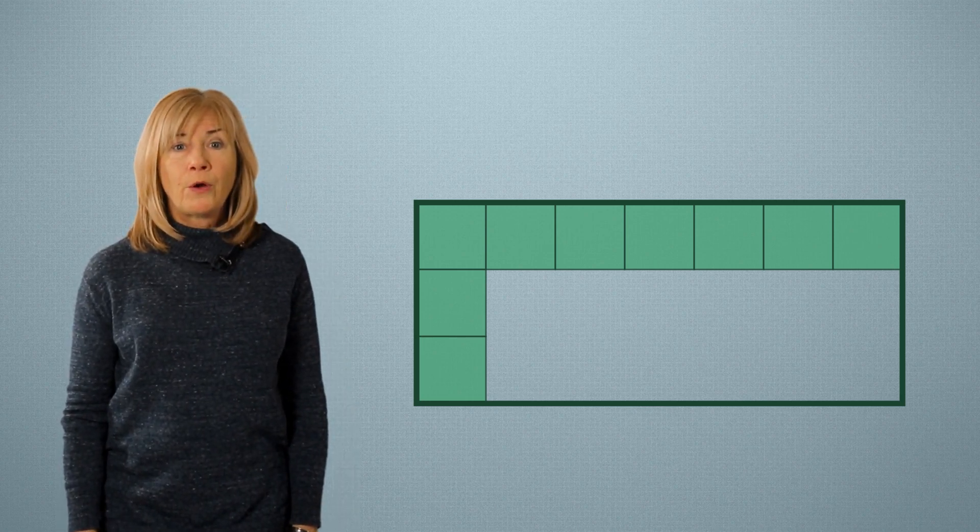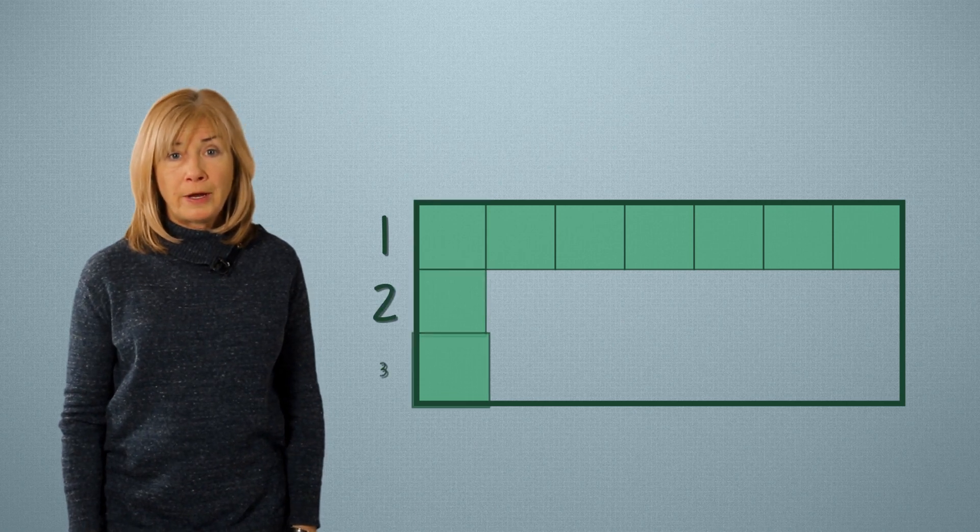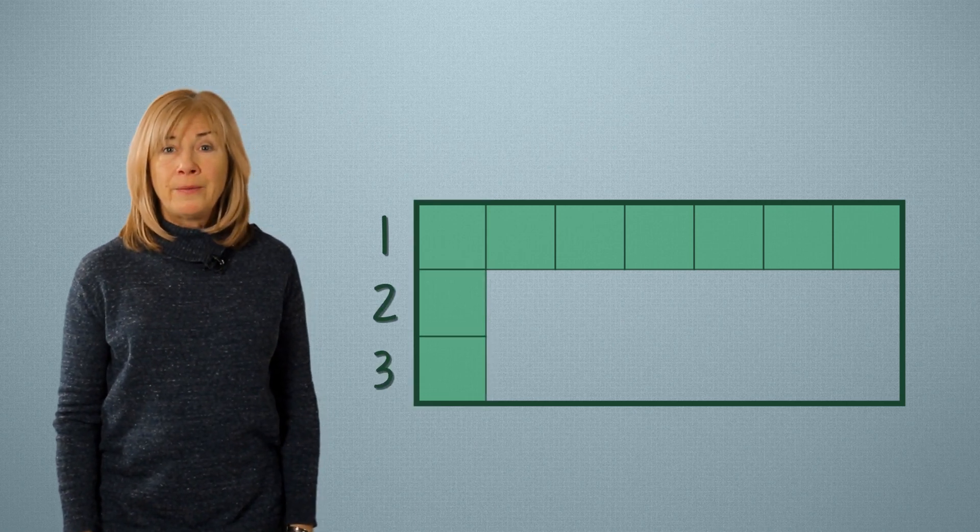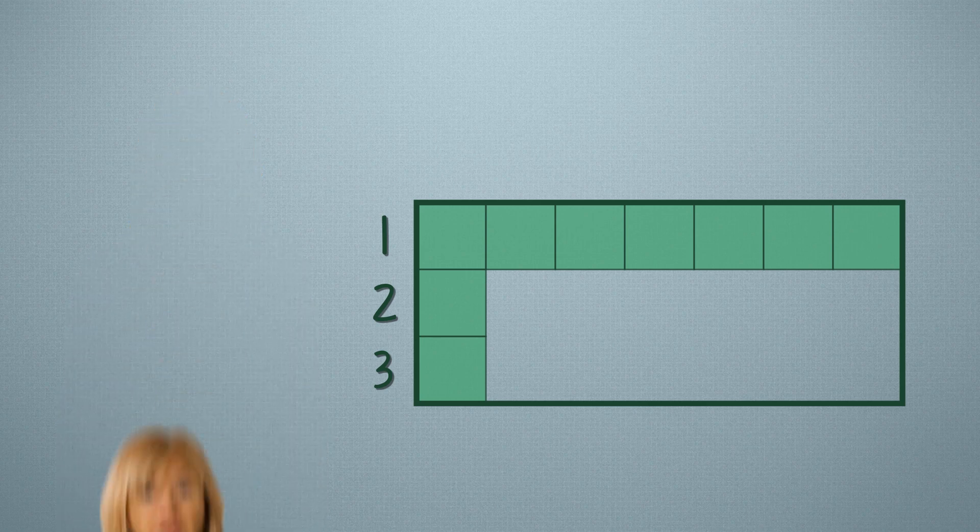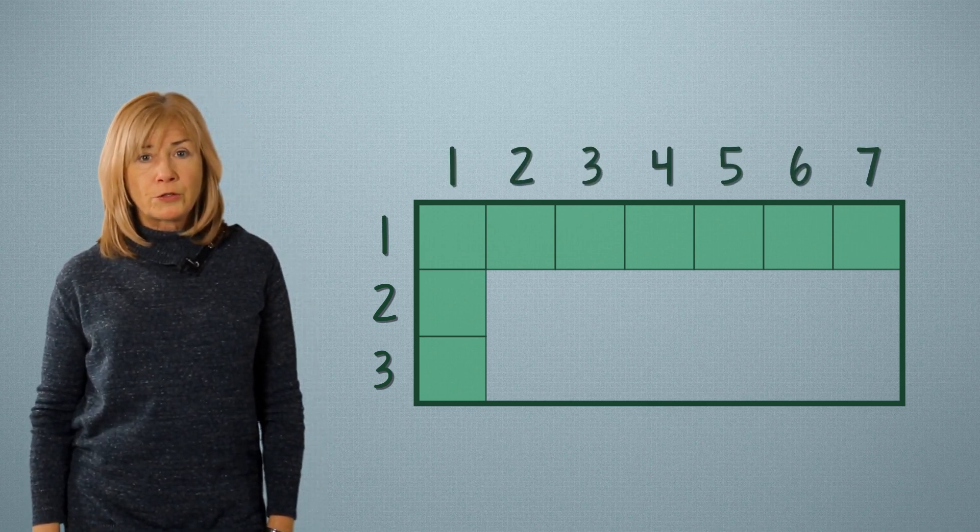We have a little information here. How many rows do I have? I have 3 rows: 1, 2, 3. And now, how many square units are in each row?